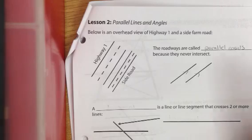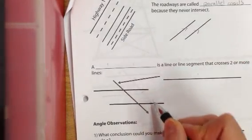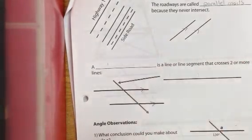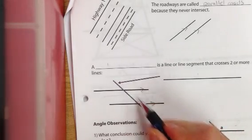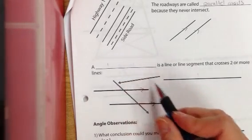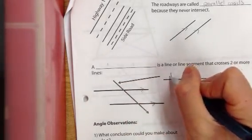Now, if I took a look at two roads, and I put these little symbols indicating they're parallel, and I connect them with a service road, we call that service road a transversal.